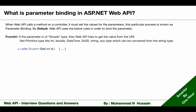If you see the following example, I have created a method and that method is taking one parameter of int type. So in this case, Web API will try to get the value from the URI to set in this parameter.